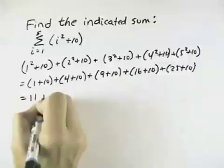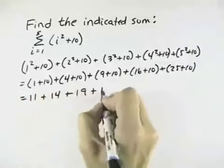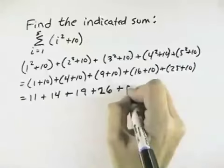So we have 11 plus 14, plus 9 and 10 is 19, plus 16 and 10 is 26, and 25 and 10 is 35.